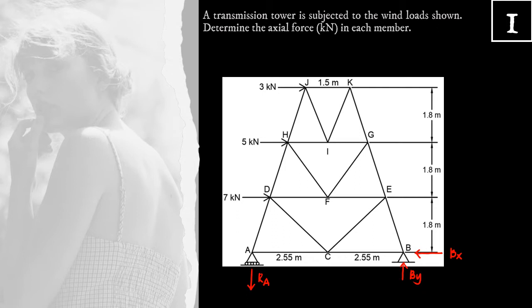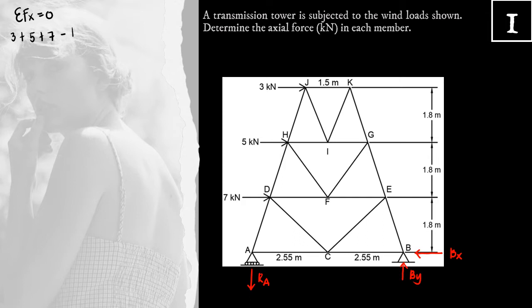Let's solve for Bx by using the equilibrium condition summation Fx equal to 0. Notice that all the external forces are horizontal to the right. To balance these external forces, Bx should act to the left. Following the sign convention — positive to the right, negative to the left — we have 3 plus 5 plus 7 kilonewtons minus Bx equal to 0. Solving for Bx, Bx is equal to 15 kilonewtons.